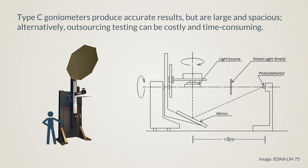The Type-C goniophotometer is the most common goniophotometer for measuring intensity distribution of lamps, luminaires, and fixtures. However, they are large and require a spacious, dedicated black laboratory, which can be costly and inconvenient.